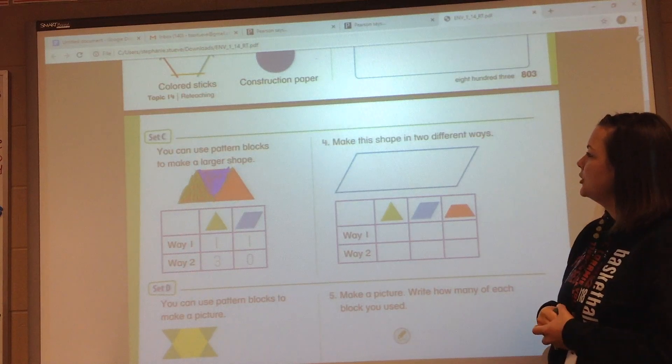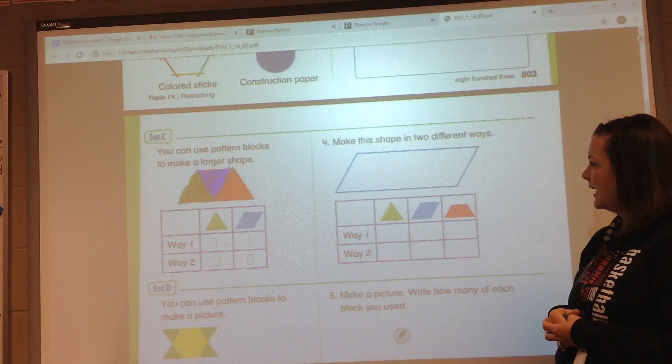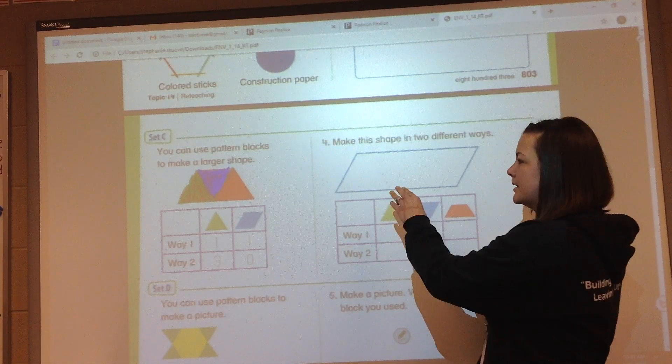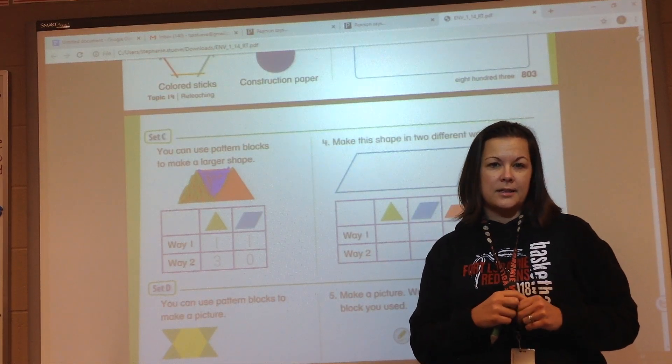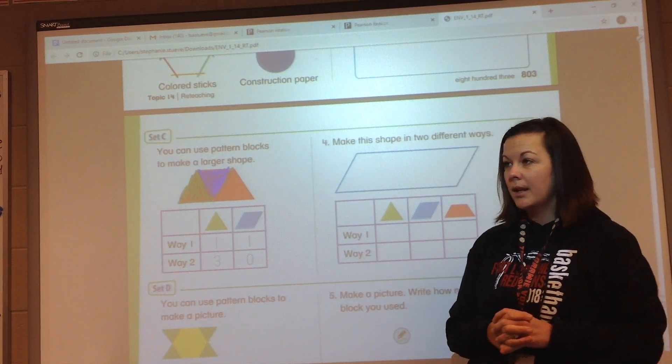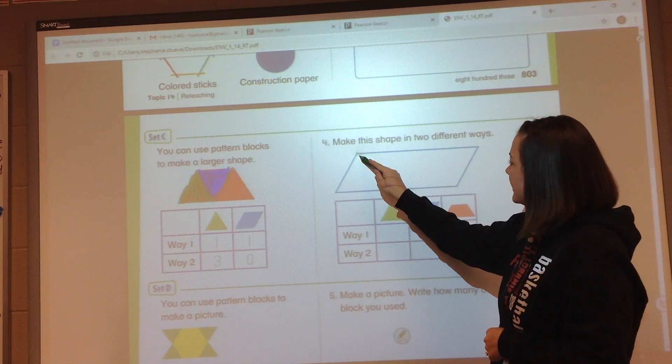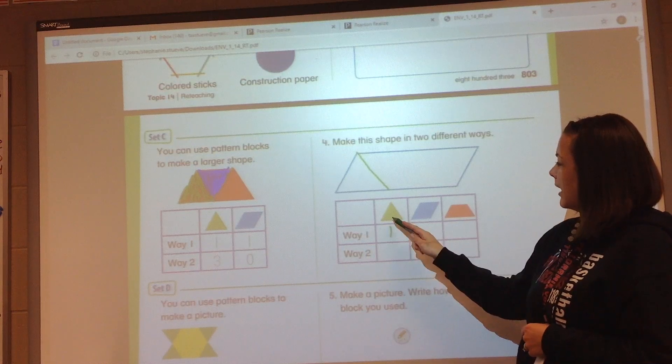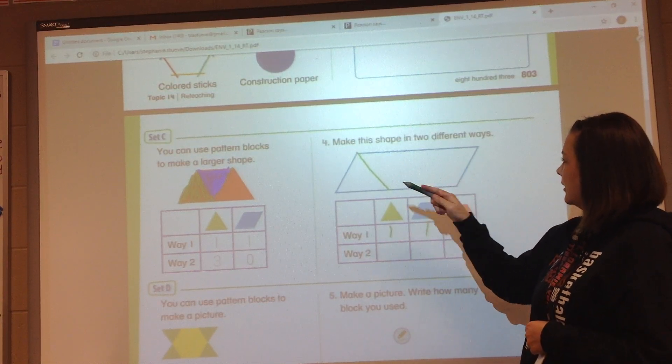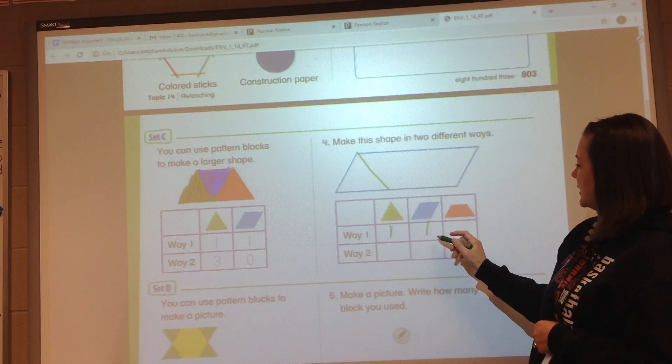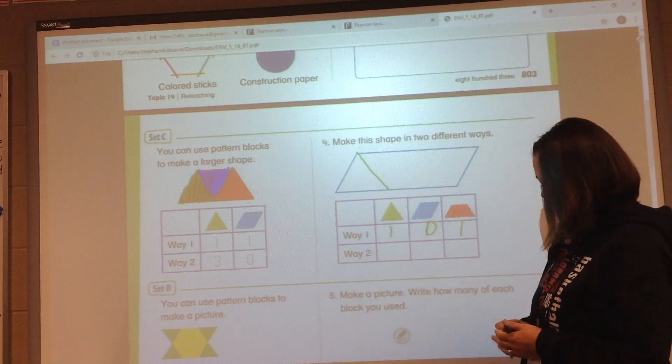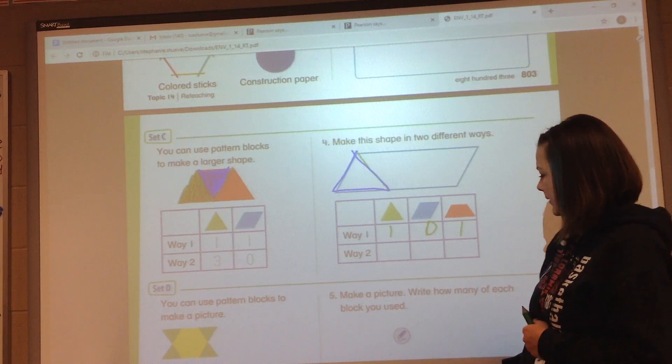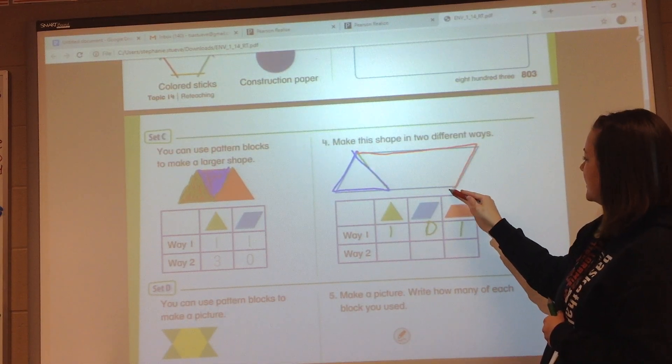All right, over here it wants you to make this shape in two different ways. Pause the video and see if you can put your pieces on top of there to make it fit two different ways. All right, one way we could have done this would be one triangle and one rhombus. I'm sorry, not rhombus, one trapezoid, and I'll outline those. So there's your triangle, and here's your upside down trapezoid.